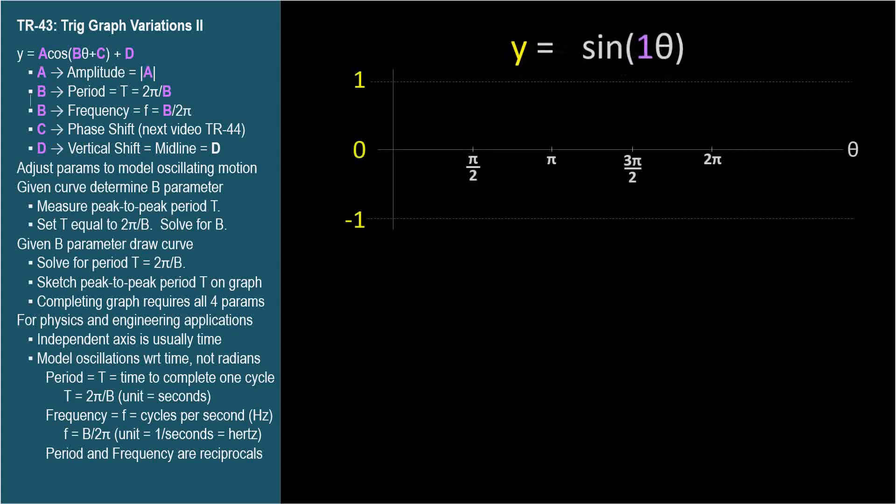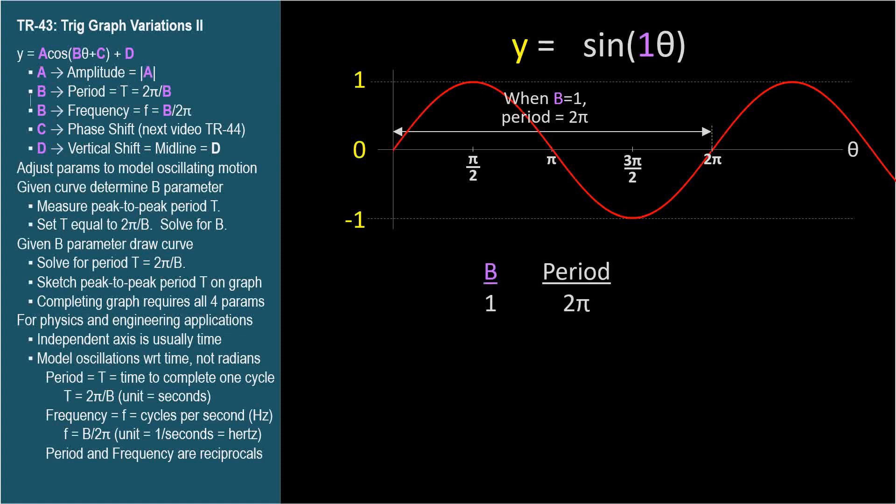When we graph y equals sine theta, the b parameter is 1, the coefficient of the independent variable theta. As we know, the period of y equals sine theta is 2 pi. So let's create a chart. When b is 1, the period is 2 pi.